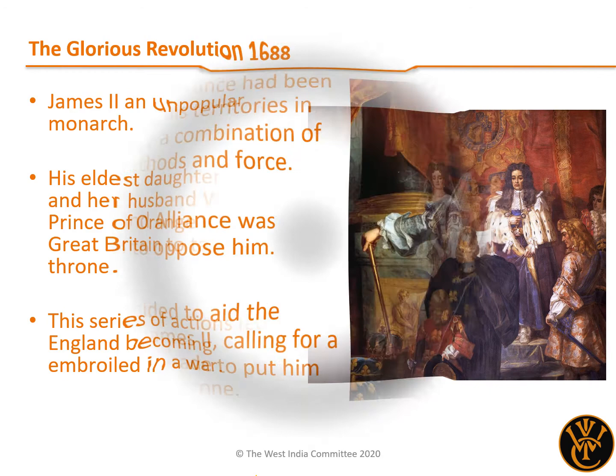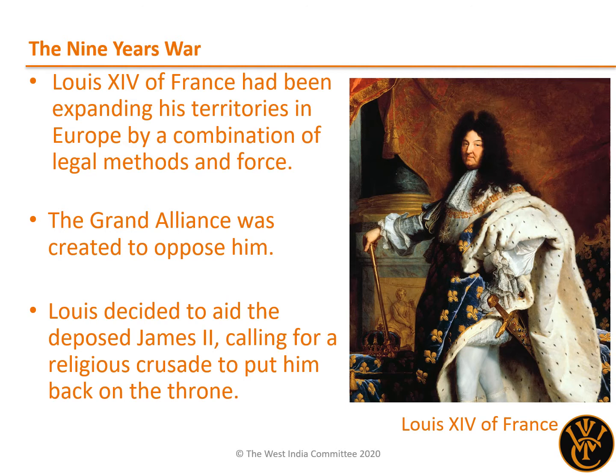The French King Louis XIV, famously known as the Sun King, had dreams of expanding French control over the continent, and had worked for several years to that end through a combination of questionable legal methods and forcible annexation of neighbouring territories.